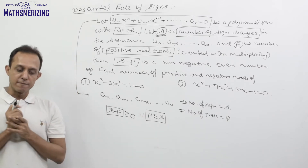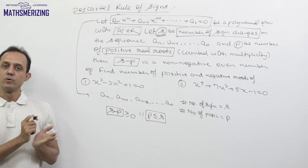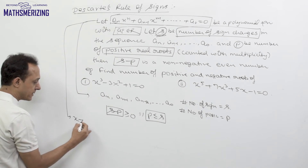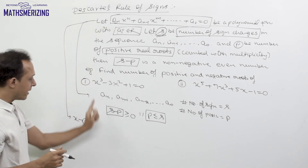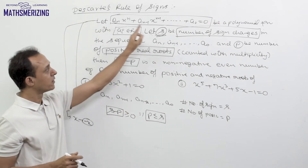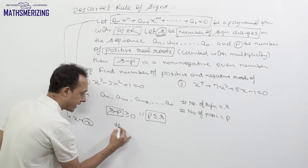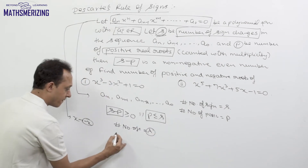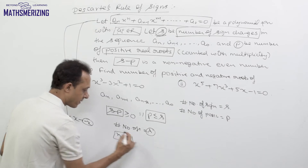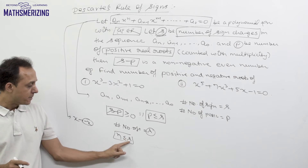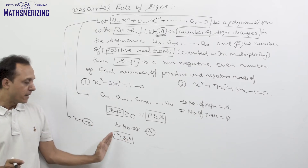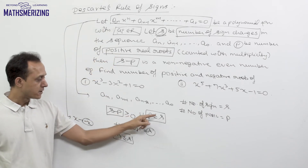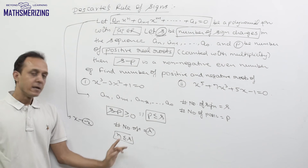We can also use Descartes' Rule of Signs for negative real roots. To do this, we simply replace x with minus x, then again write out the sequence of all coefficients and look for the number of sign changes. In that case, the number of negative real roots should always be less than or equal to s, and the difference between s and the count of negative roots should also be a multiple of two.